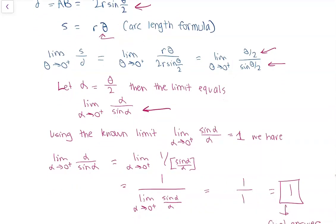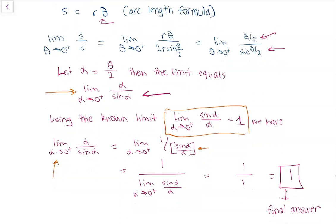Now we'll be using a well known limit which is limit of alpha going to zero plus of sine alpha divided by alpha is equal to 1. And we can see we have almost the same thing here except it's the reciprocal. So what we can do is write limit of alpha over sine alpha. This is the same as the reciprocal of sine alpha divided by alpha. And the limit of the reciprocal is the same as 1 divided by the limit of sine alpha over alpha.